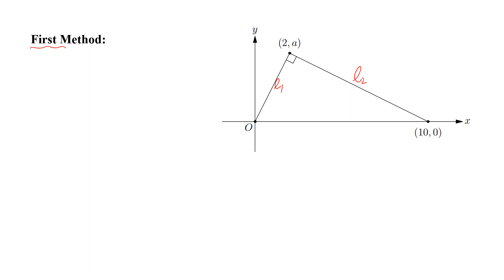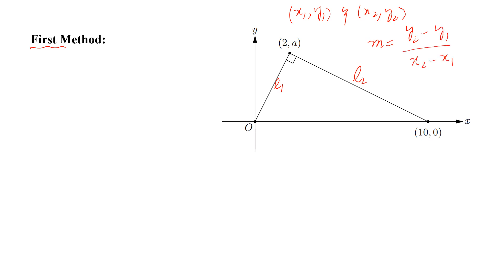We know that if there are two points X1, Y1 and X2, Y2 on the XY plane, we can find the slope of the line by the formula M equals Y2 minus Y1 divided by X2 minus X1. This point is (0, 0), so the slope M1 equals A minus 0 divided by 2 minus 0, which gives A divided by 2.